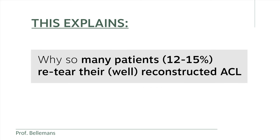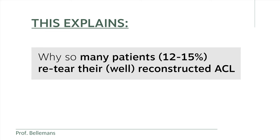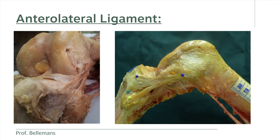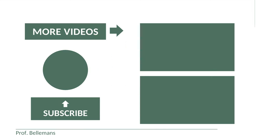Finally, we did not understand why so many patients — 12 to 15% — re-tore their well-reconstructed ACL after the operation. Now we know why: their ALL was also damaged and left untreated. Therefore they solely relied on their reconstructed ACL, which is not strong enough to do the job on its own and carries a high risk of re-tearing. With this, I have explained the importance of the anterolateral ligament and how crucial it is in the setting of ACL injury and treatment. Thank you for watching.